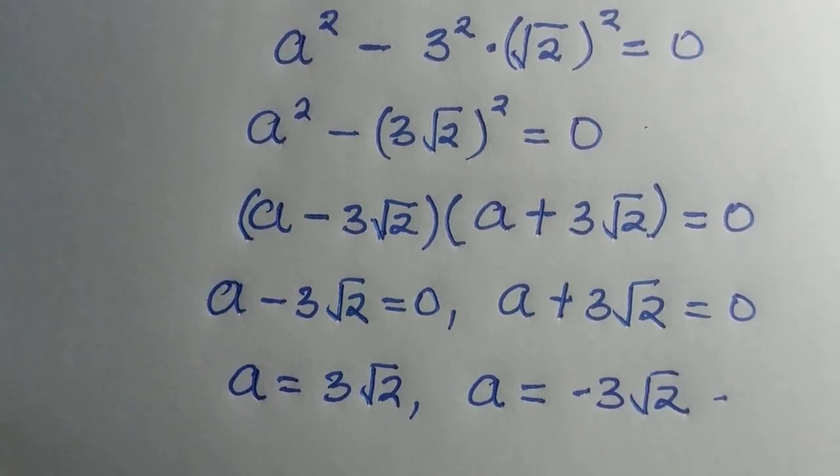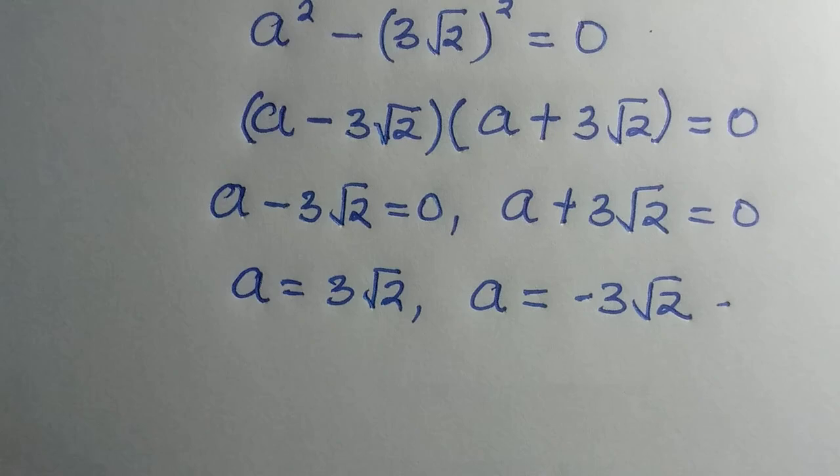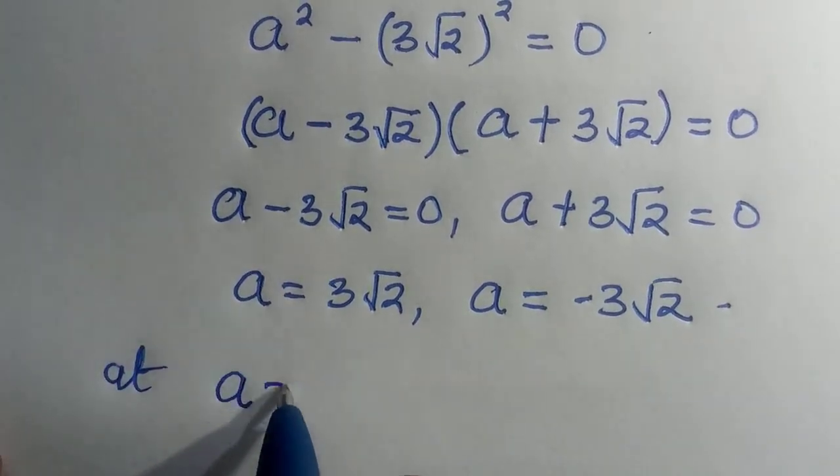So here we have a equals 3 root 2, and the other one is a equals minus 3 root 2. For the first one we got, which is a equals 0, let's try to verify that. When we verify at a equals 0.